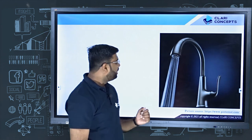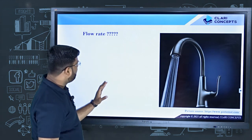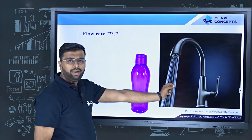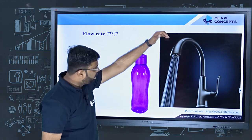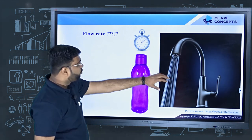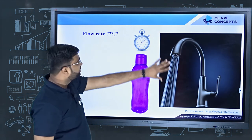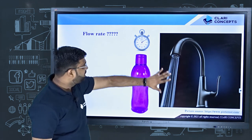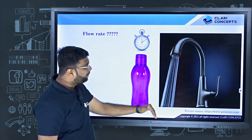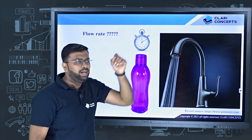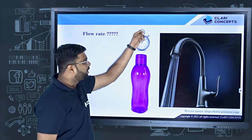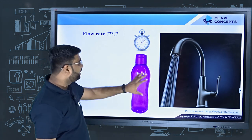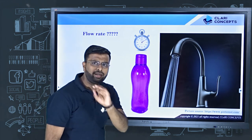We have seen it in the previous lecture. If I have a water bottle, I will put it and measure how much time it takes to fill. Suppose there is 2 liters of water in 10 seconds. That means 2 liters of water comes out in 10 seconds. So in 1 second, it is 2 divided by 10 — that means 0.2 liters per second. You can measure the flow rate practically, realistically, like this.